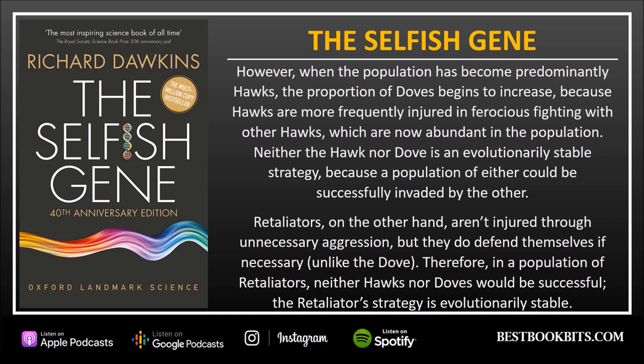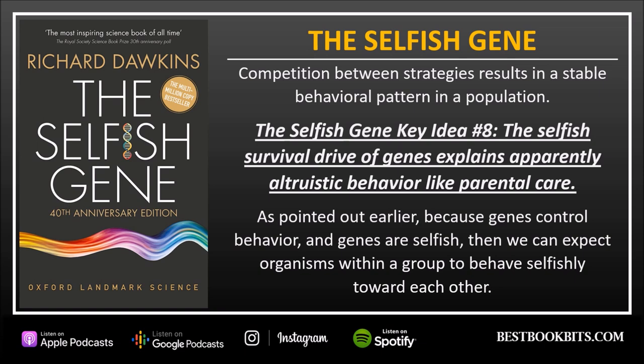However, when the population has become predominantly hawks, the proportion of doves begins to increase, because hawks are more frequently injured in ferocious fighting with other hawks, which are now abundant in the population. Neither the hawk nor the dove is an evolutionary stable strategy, because a population of either could be successfully invaded by the other. Retaliators, on the other hand, aren't injured through unnecessary aggression, but they do defend themselves if necessary — unlike the dove. Therefore, in a population of retaliators, neither hawks nor doves would be successful. The retaliator strategy is evolutionarily stable. Competition between strategies results in stable behavioral patterns in a population.